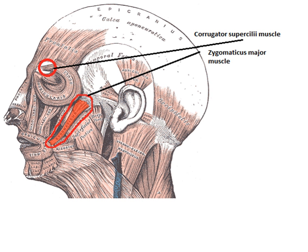Detecting emotional information begins with passive senses which capture data about the user's physical state or behavior without interpreting the input. The data gathered is analogous to the cues humans use to perceive emotions in others.